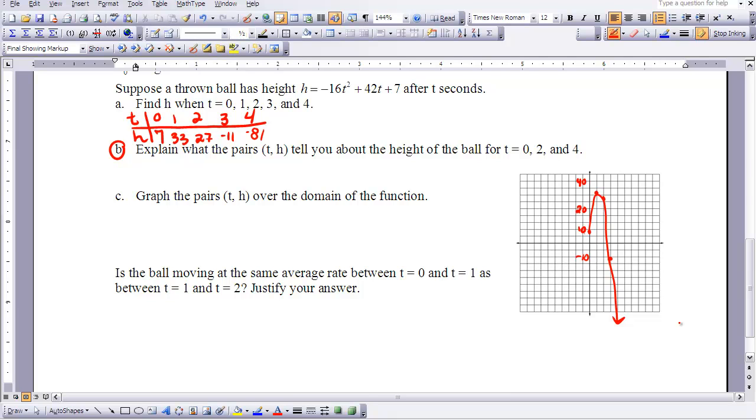The next part of this is to evaluate whether our rate of change is the same between zero and one second as it is between one and two. And you know how to do that. We can calculate our rate of change by looking at our change in y over change in x. So let's take a look from zero to one. That's 33 minus 7 over 1 minus 0, and so that would give us 26 feet per second. And that's from zero to one.